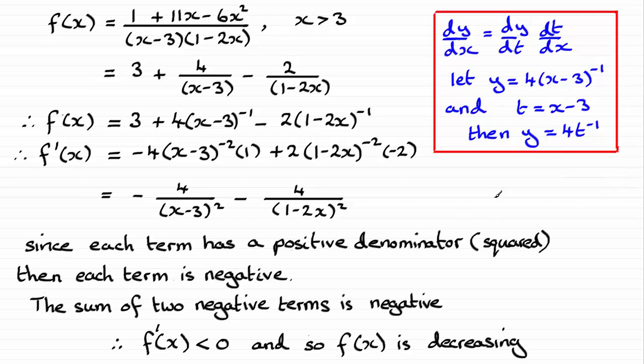So in conclusion, what we've got is that since each term has a positive denominator, it's squared, then each term here is going to be negative. And so the sum of two negative terms is going to be negative. So therefore f dash x, that first differential of f of x, is going to be a negative value, less than zero. And so f of x is decreasing.